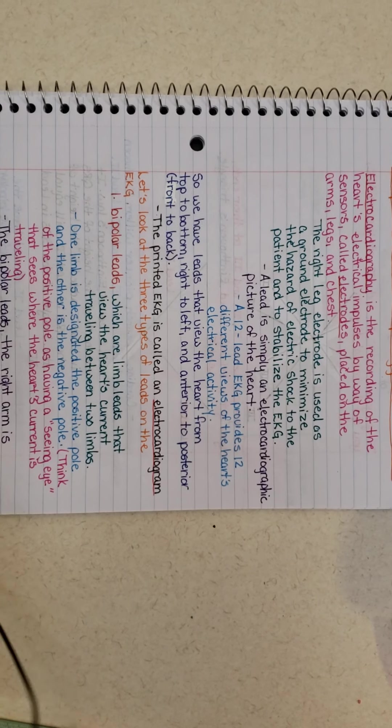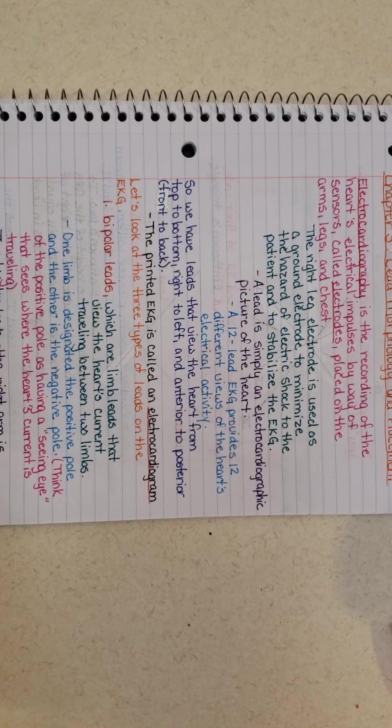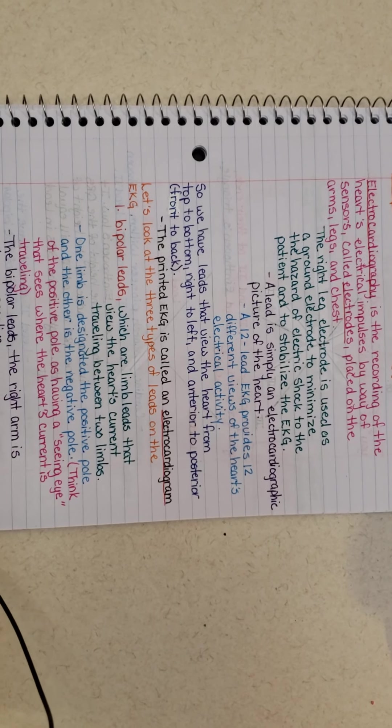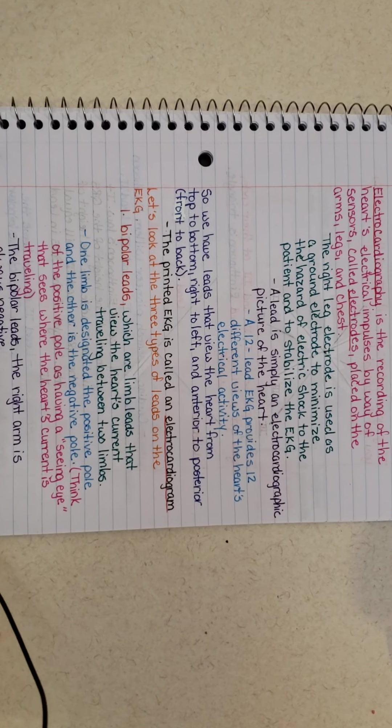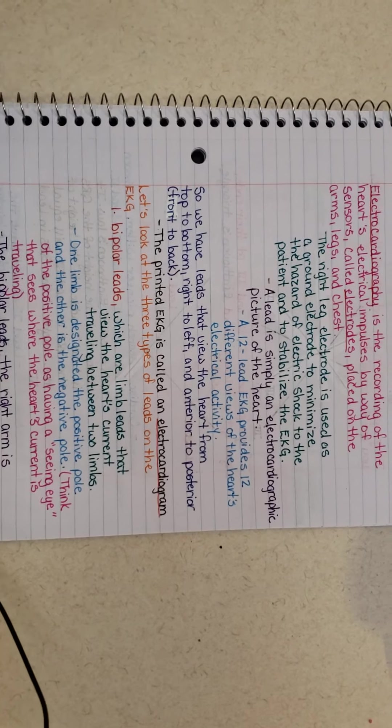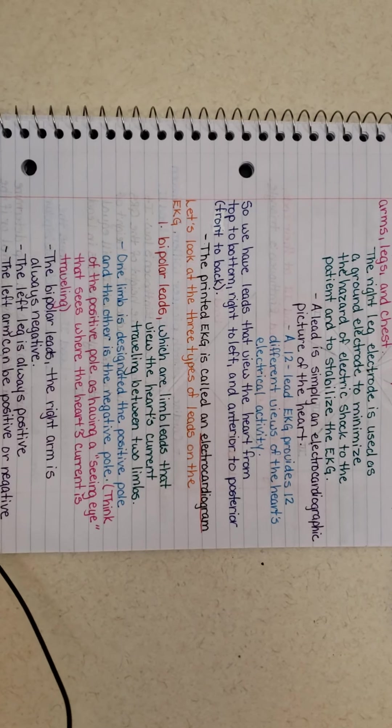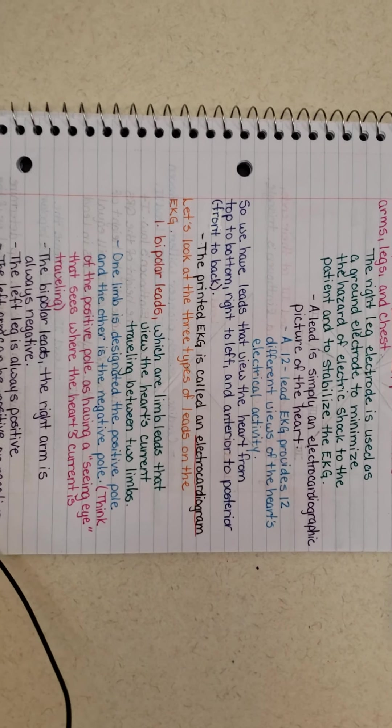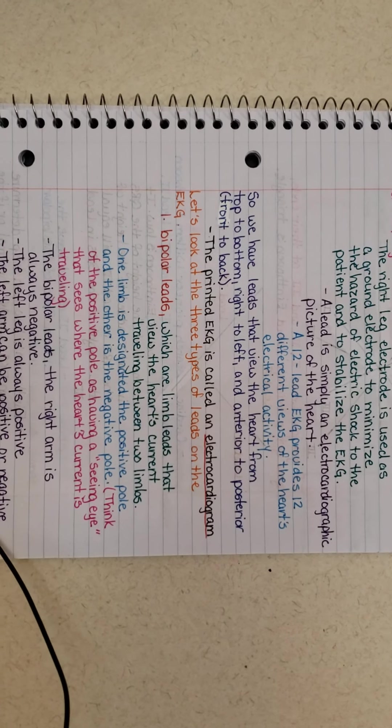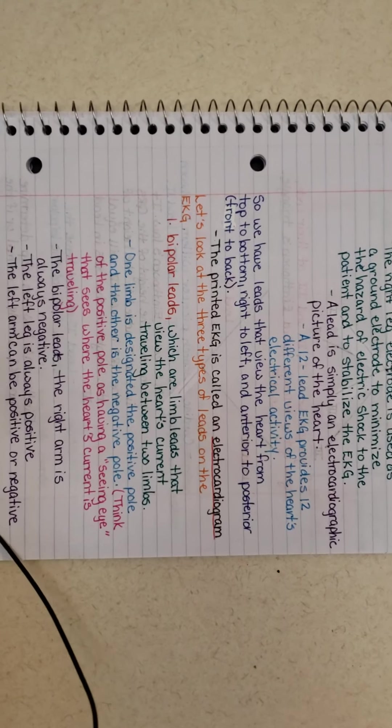A 12-lead EKG provides 12 different views of the heart's electrical activity. It is 12, even though there are 10 leads. True enough, if you think about it, we have 10 leads. You have four limb leads and you have six chest leads. That equals 10.